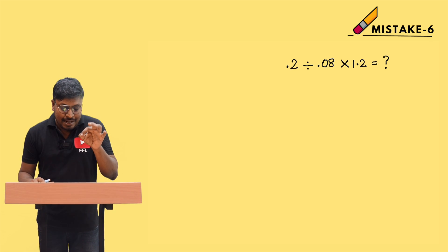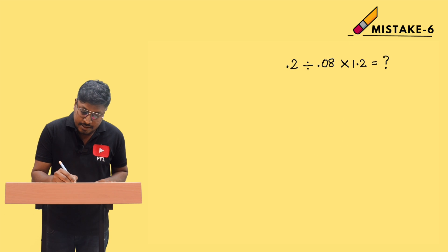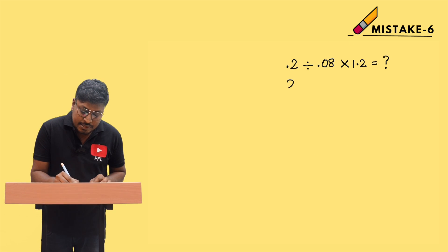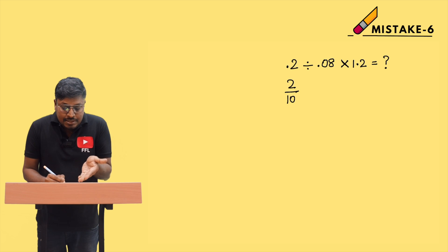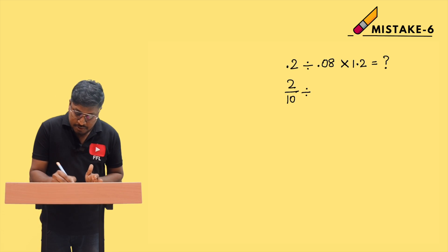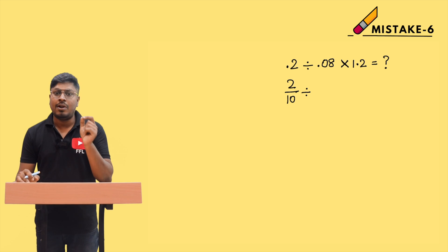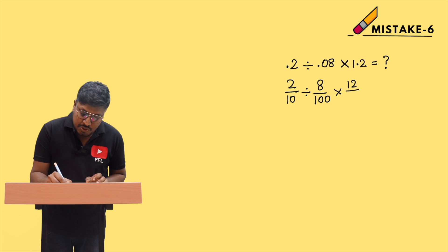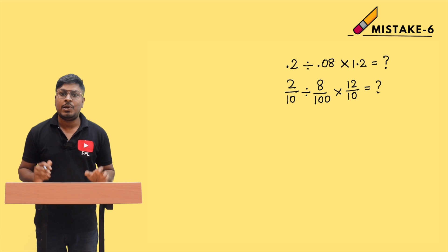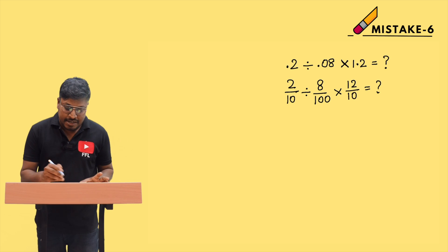To remove the decimal point from each number, convert them to fractions. For example, 0.2 can be written as 2/10, and 0.08 can be written as 8/100, and 1.2 can be written as 12/10. So now the question becomes: (2/10) ÷ (8/100) × (12/10) = ? Now there are no decimal values, and it is easy to multiply and divide.